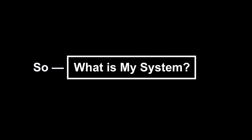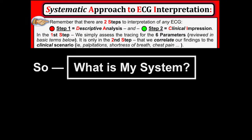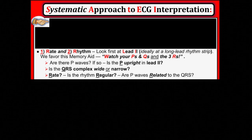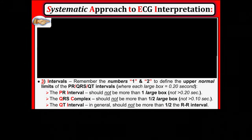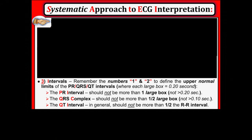My system for 12-lead ECG starts with rate and rhythm. Next, I look at intervals: the PR interval, QRS, and QT. The PR interval is long if greater than one large box. The QRS is wide if greater than half a large box — greater than 0.10 seconds. The QTc should not be more than half the R-to-R interval.